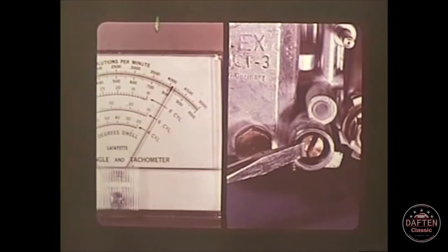Idle speed adjustment on the 30 PICT-3 is very simple. With the engine at normal operating temperature and a tachometer attached, adjust the idle speed by turning the air bypass screw. Turning it in reduces the speed, turning it out increases the idle speed, and the fuel mixture is automatically regulated. This is the only adjustment you make on the 30 PICT-3.